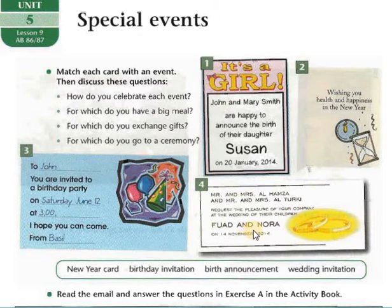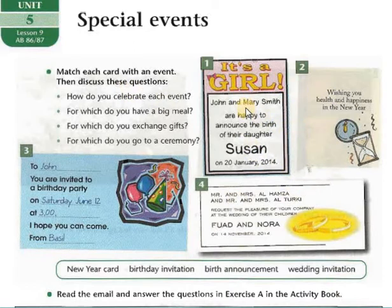Before we match them, let's read each one and find the meaning of each word. Card number one — it's a girl! John and Mary Smith are happy to announce the birth of their daughter Susan.